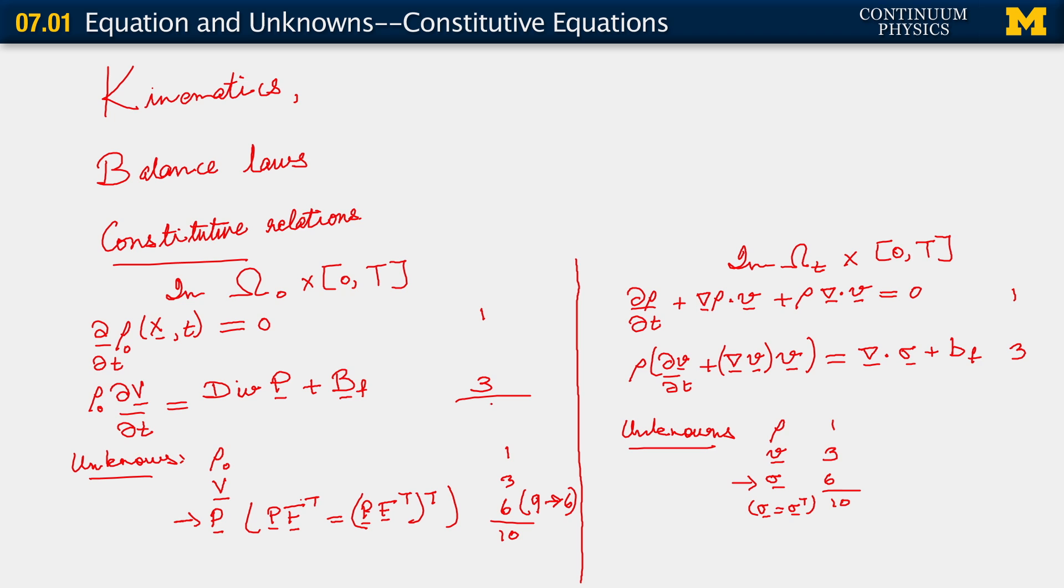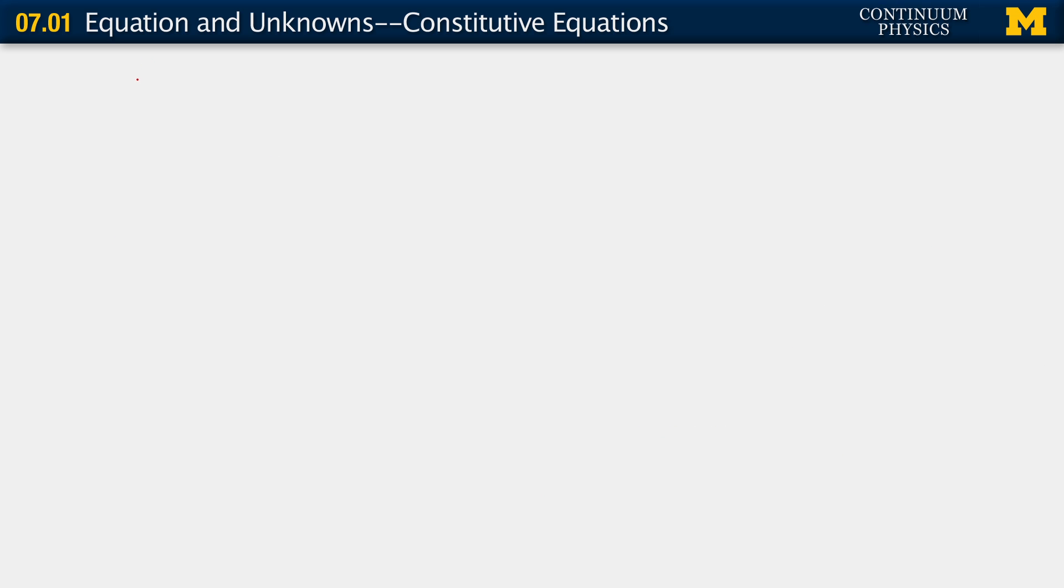But this really is a problem, whether you look at it on the left or the right, because the number of equations we have are fewer. Essentially what we've done is, in order to write out our balance laws, we introduce this notion of stress. And the stress being a tensor just involves more unknowns. Even if we try to take advantage of the symmetry of the Cauchy stress, that just doesn't save us. We simply have more unknowns than we have equations here. Think about what the approach ought to be to resolve the situation. We have in omega naught or in omega t, it doesn't really matter, we have 10 unknowns and only 4 equations.